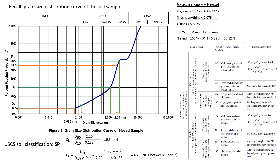Since the curvature coefficient does not meet the well-graded criteria, this only leaves us with one option, which is poorly graded. So the USCS soil classification is simply SP. The key emphasis for this question: when determining percent gravel, for MIT you use anything greater than 4.75 millimeters, and for USCS you use anything greater than 2.00 millimeters.